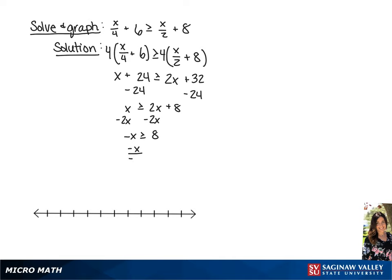We're going to divide each side by negative 1. This means we're going to have to flip the sign, and it will give us x is less than or equal to negative 8.